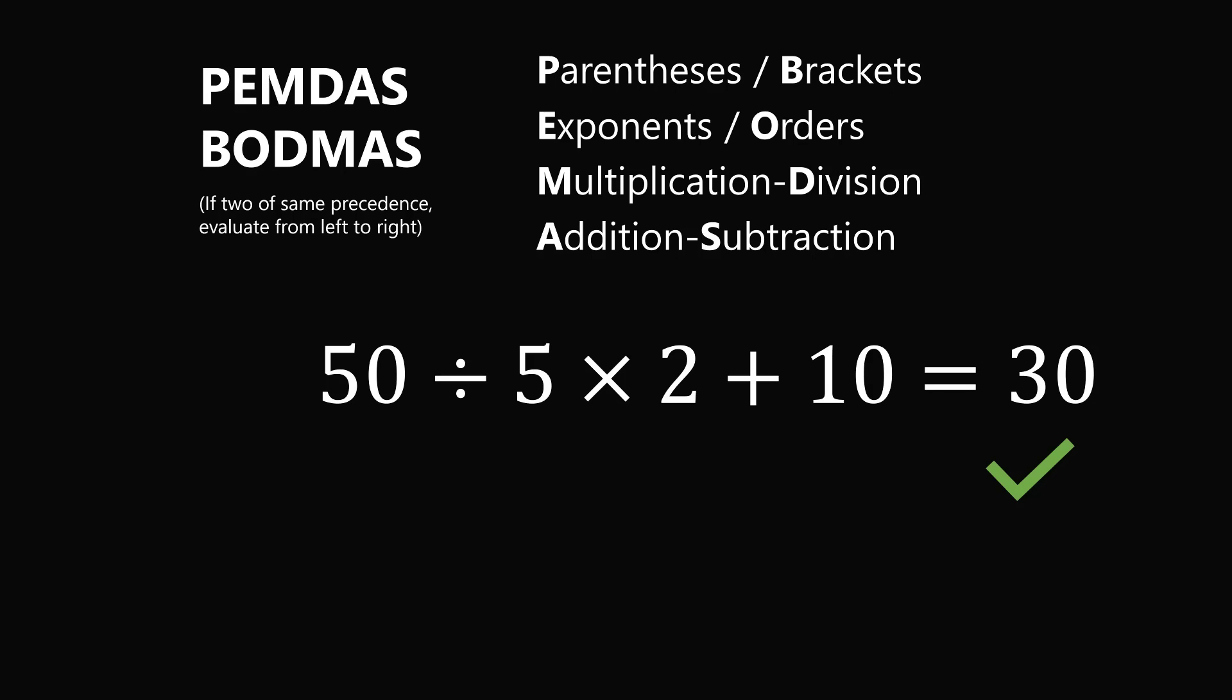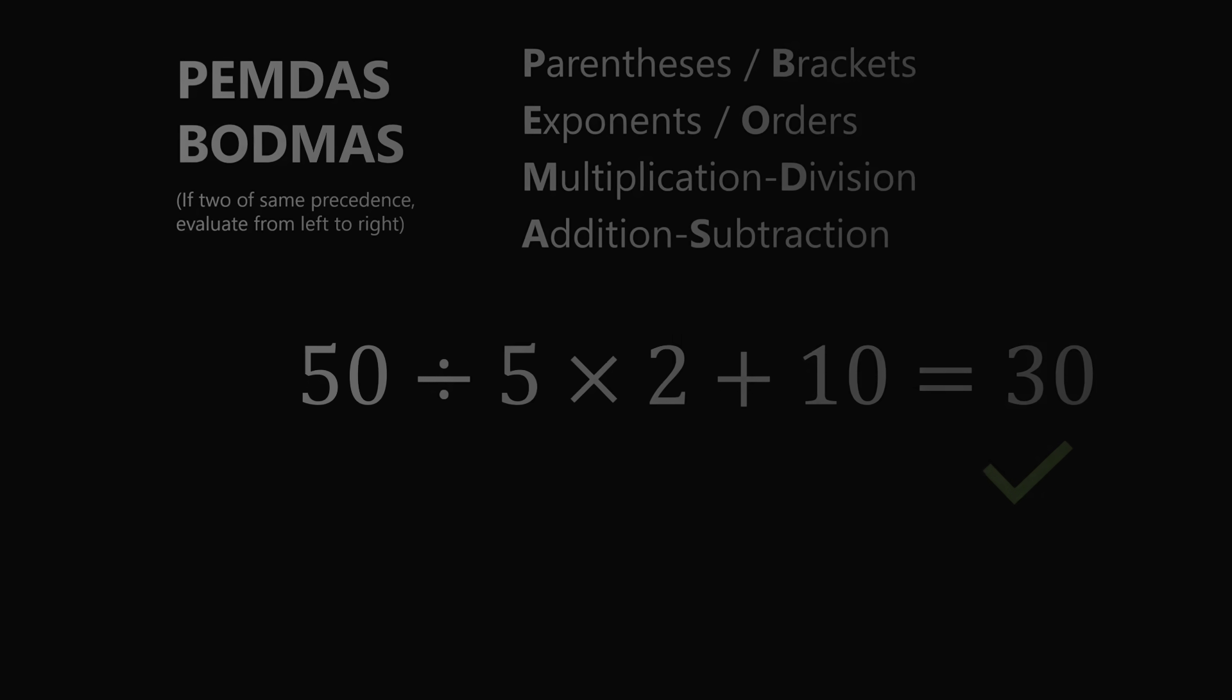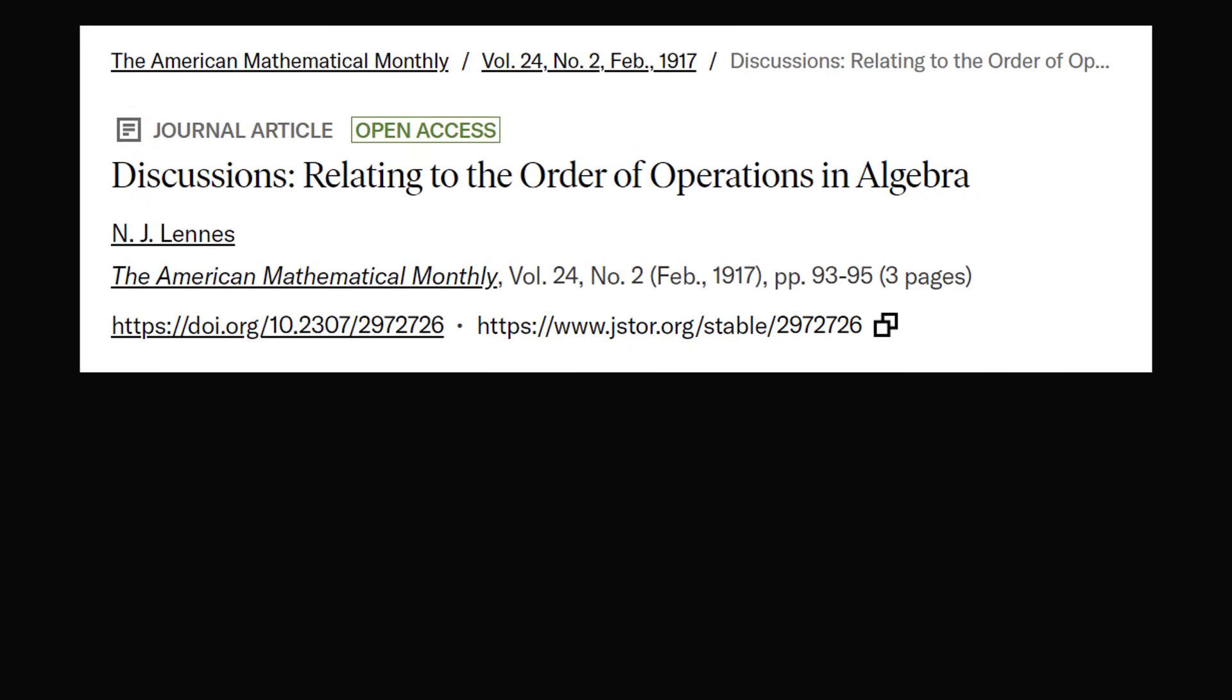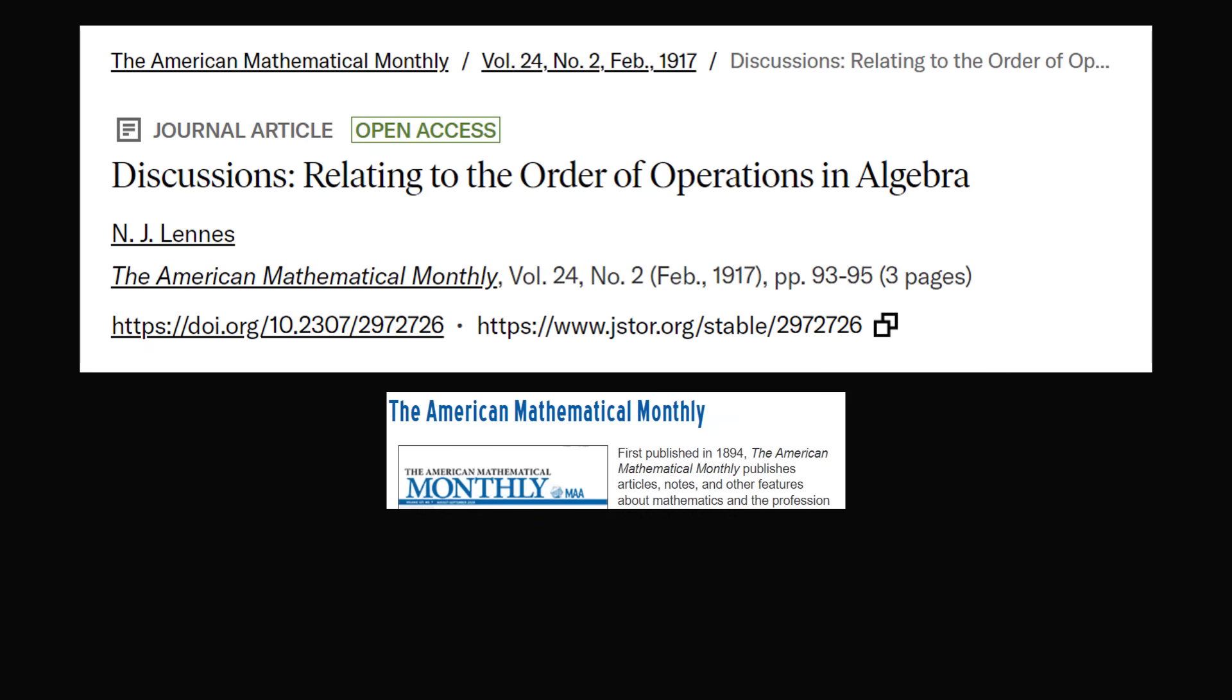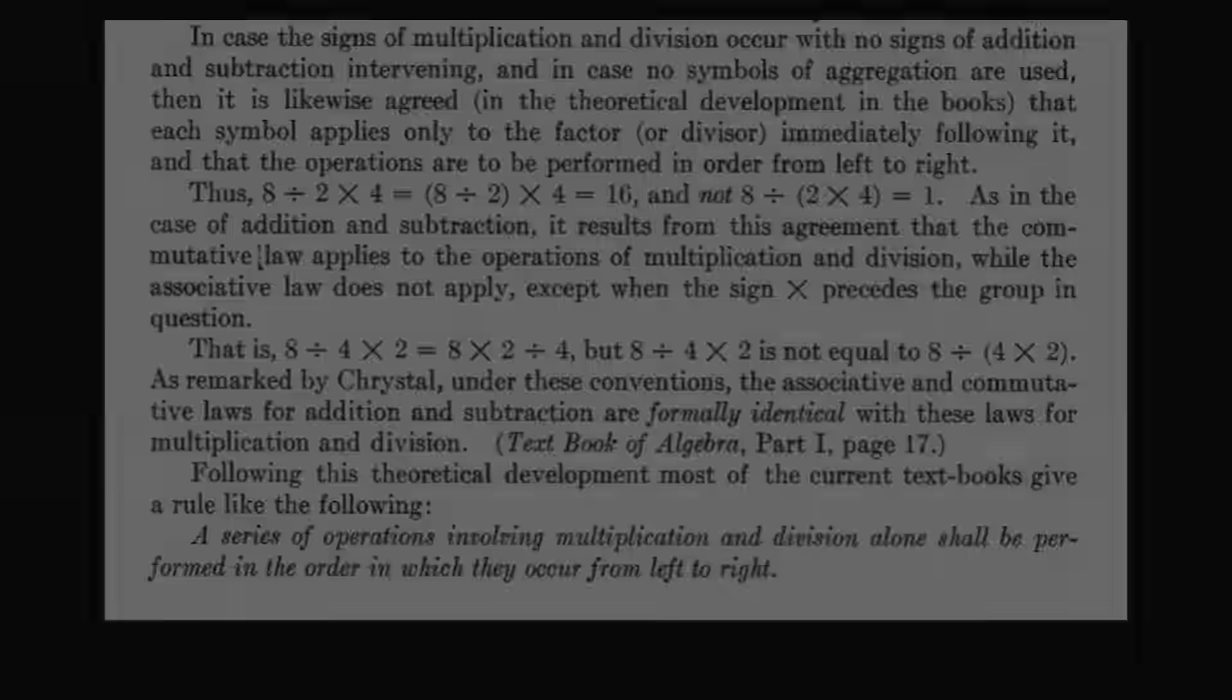But if you were confused by how to evaluate this expression, you should know that you are in good company. The very topic of how to evaluate an inline expression is not a new topic. The American Mathematical Monthly, which was first published in 1894, had an article about the order of operations that was published all the way back in the year 1917. For over a hundred years, people have been thinking about how to evaluate the order of operations. And yes, this is a math topic that was published in the American Mathematical Monthly.